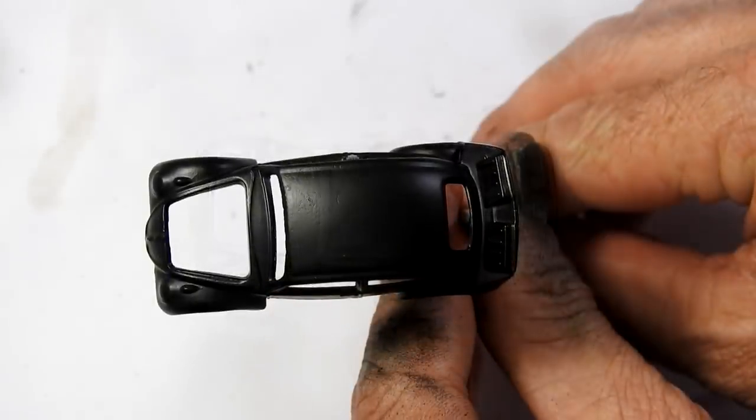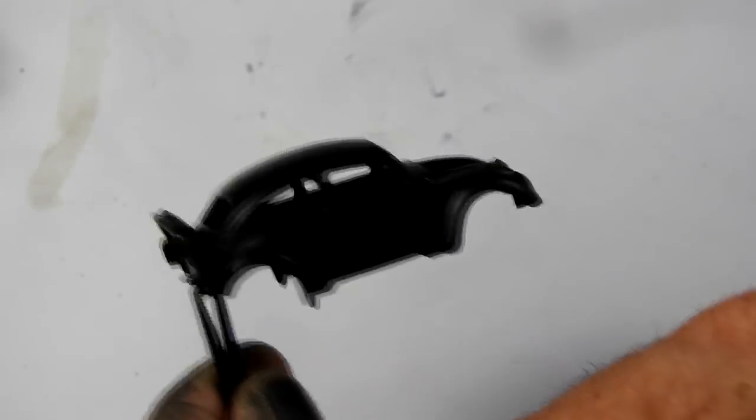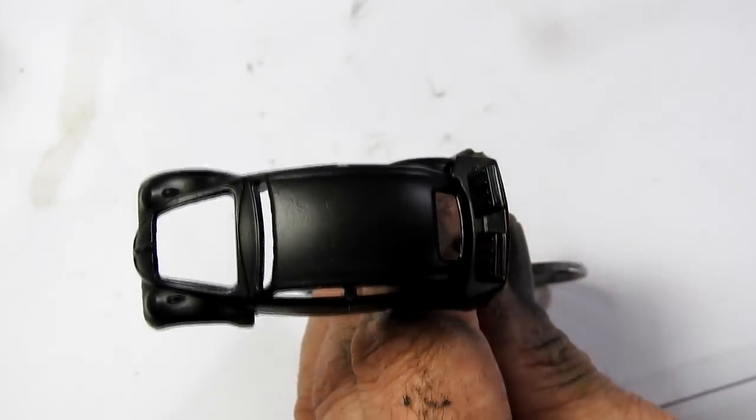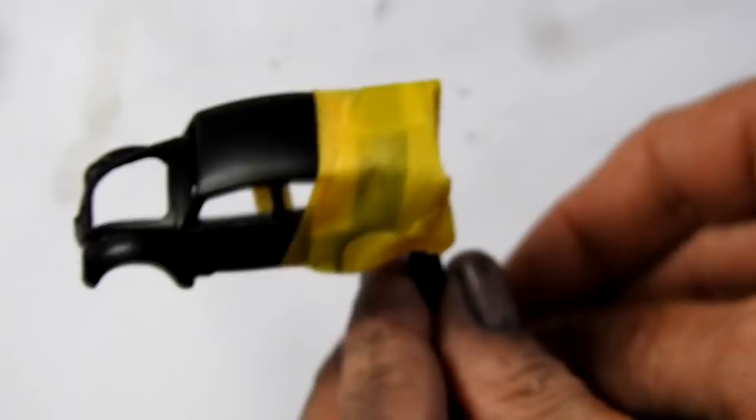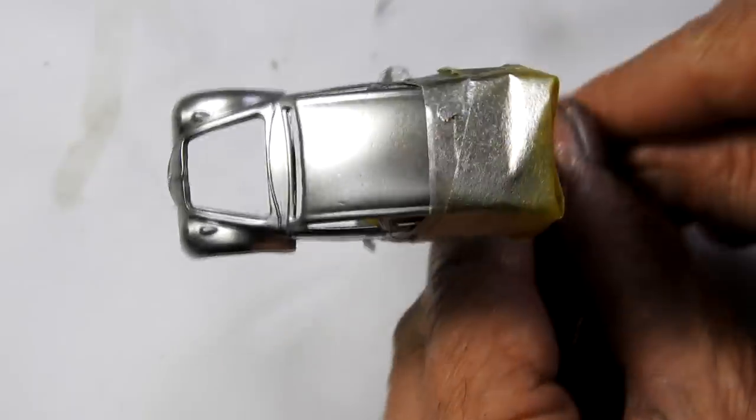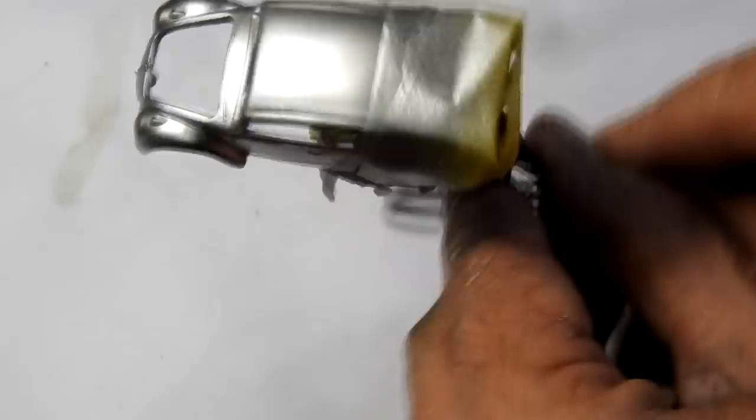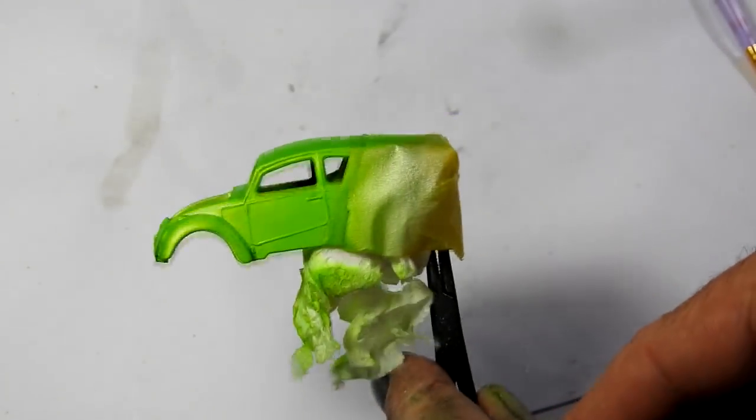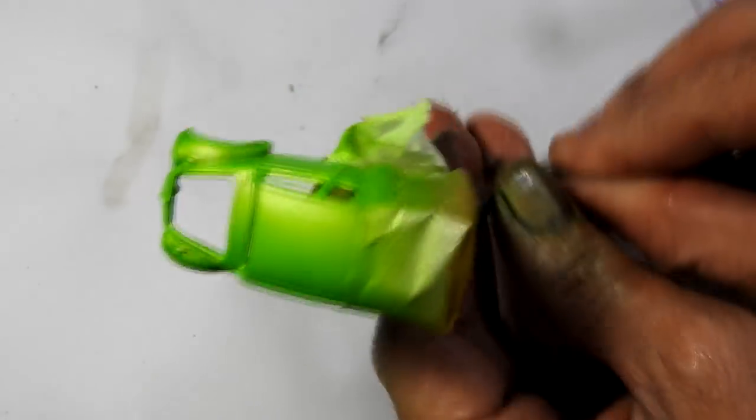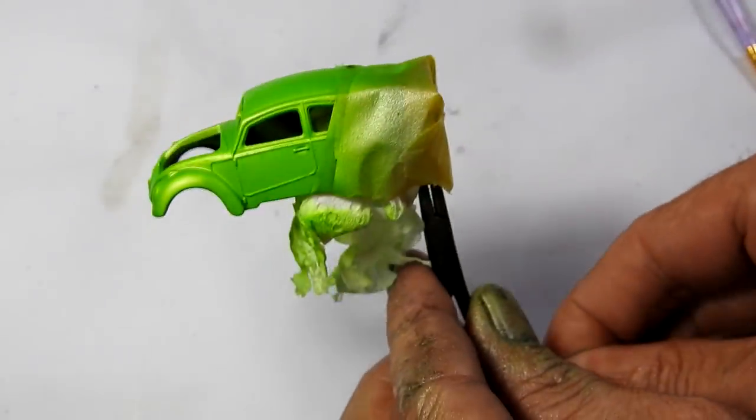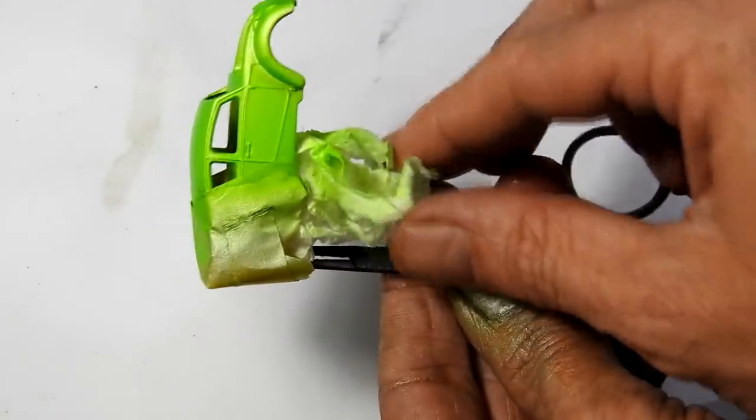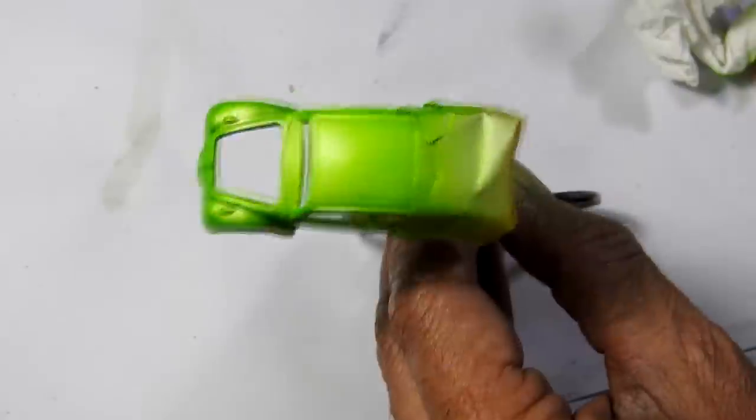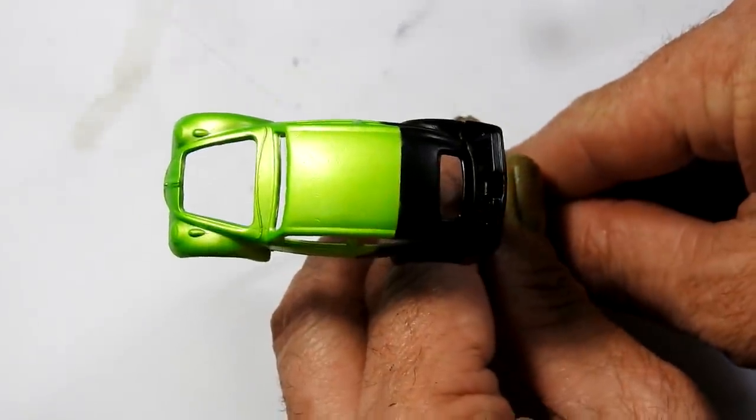I start out with a coat of black. Next, I masked off the rear of the car and I hit the front with a couple of coats of chrome. And then over the top of this, I painted fluoro green. And here it is after I've removed the masking.